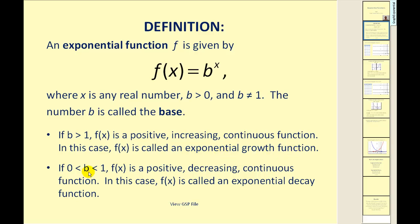If b is between zero and one, f of x is a positive, decreasing, continuous function. In this case, f of x is called an exponential decay function.